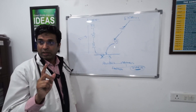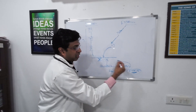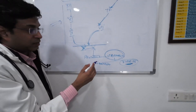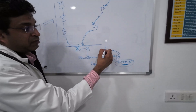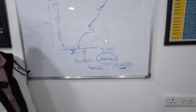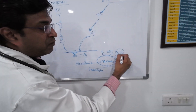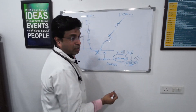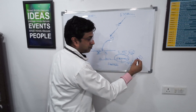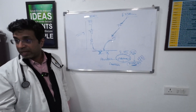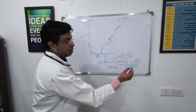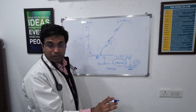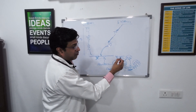Before understanding what unfractionated heparin does, you need to understand one more thing. When thrombin gets activated, it activates three more factors: factor 5, factor 8, and factor 13. Factor 13 is the fibrin-stabilizing factor — it makes cross-links between fibrin strands, creating a mesh that gives stability to the fibrin plug. If a patient is factor 13 deficient, the fibrin plug won't be strong and it manifests as bleeding.